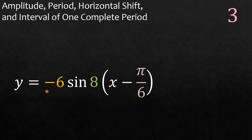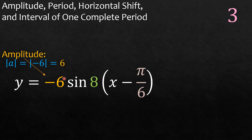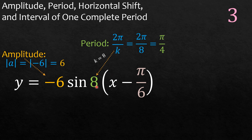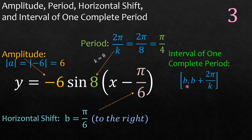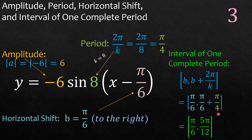Next example: y is equal to negative 6 sine 8 times x minus pi over 6. The amplitude is the absolute value of a — there is no amplitude that is negative — so the absolute value of negative 6 is 6. The period is 2 pi over k where k is 8, so 2 pi over 8 is pi over 4. The horizontal shift: we see this is negative, so b is positive pi over 6, and that is to the right. The interval is from pi over 6 to pi over 6 plus pi over 4, and combining gives 5 pi over 12. So the interval is from pi over 6 to 5 pi over 12.